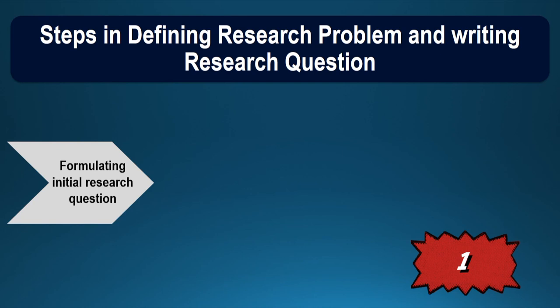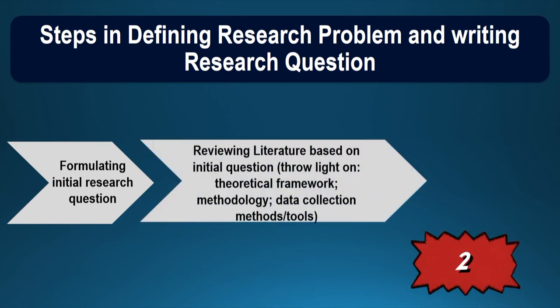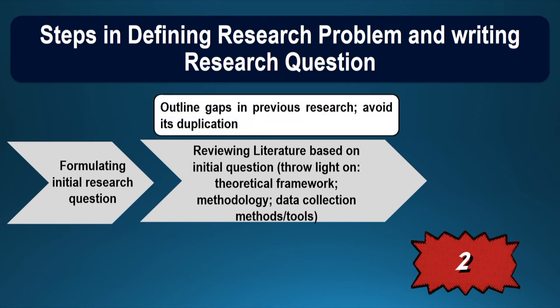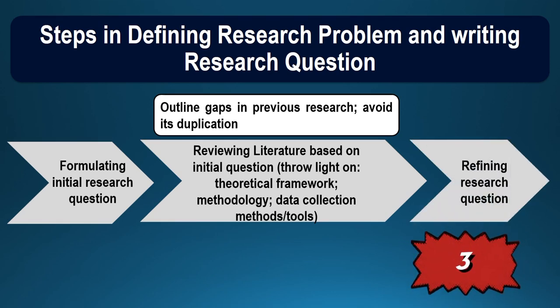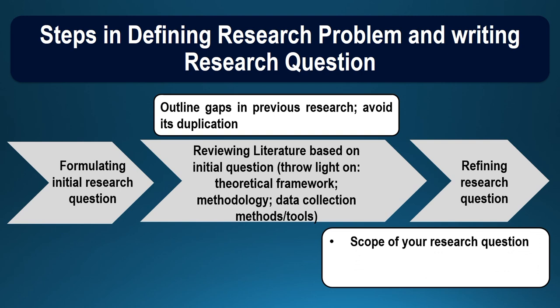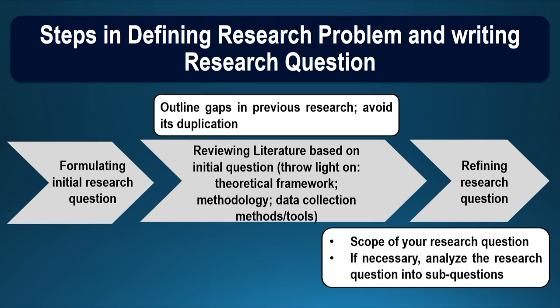Let us understand the steps required in defining a research problem and writing a research question. The first step is to formulate an initial research question, which is quite global. Then review the literature based on the initial question — try to throw light on the theoretical framework, the methodology, the data collection method, the tools, etc. — and outline the gaps in previous research while avoiding duplication. The last step is refining the research question based on its scope and, if necessary, analyzing it into sub-questions or objectives.